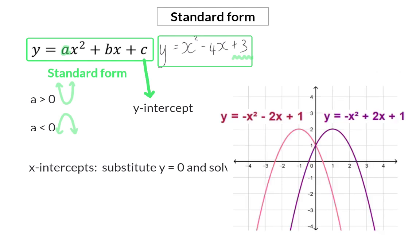In the next two functions, both of them are negative parabolas, with the a-value being a minus. For the function on the left-hand side, the b-value is also negative, and because these two signs of a and b are the same, the graph moved to the left. The graph on the right has a negative a-value and a positive b-value, and because the two signs are different, the graph moved to the right.